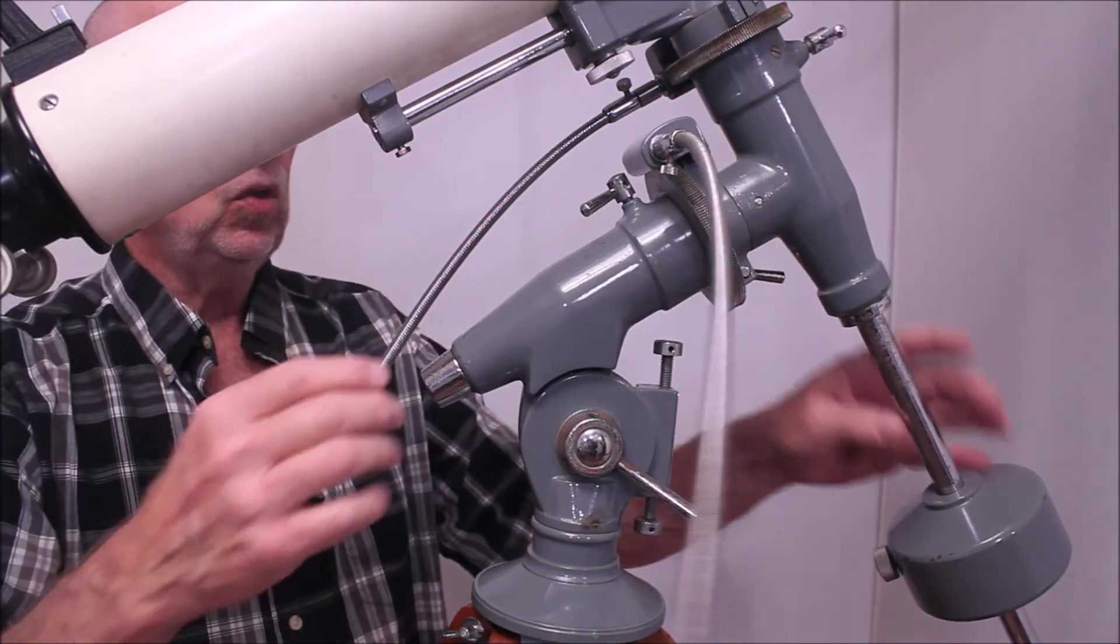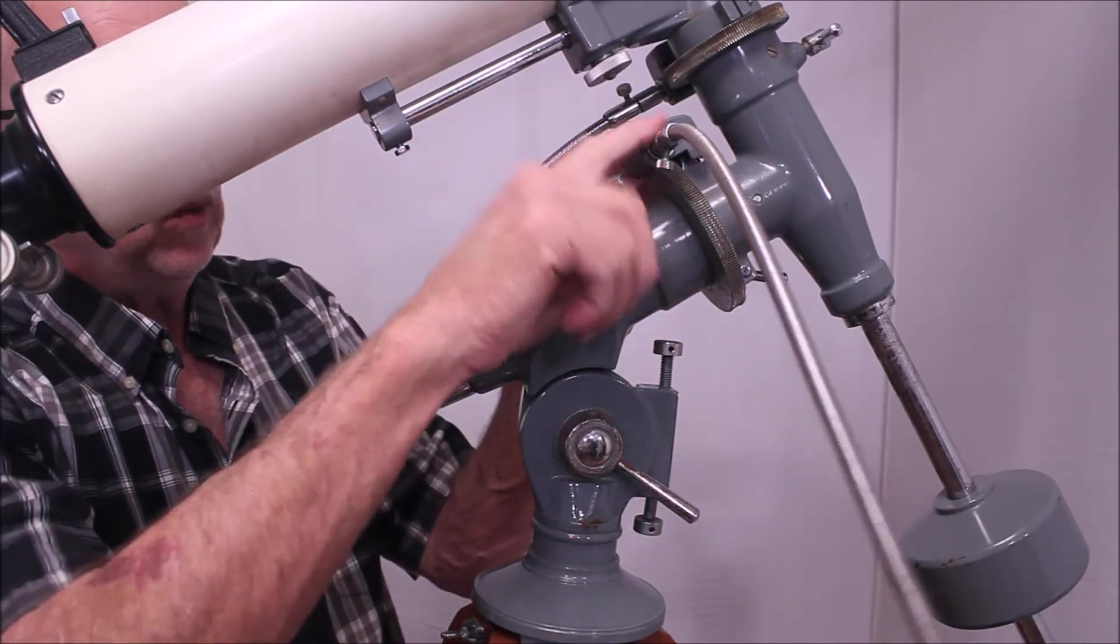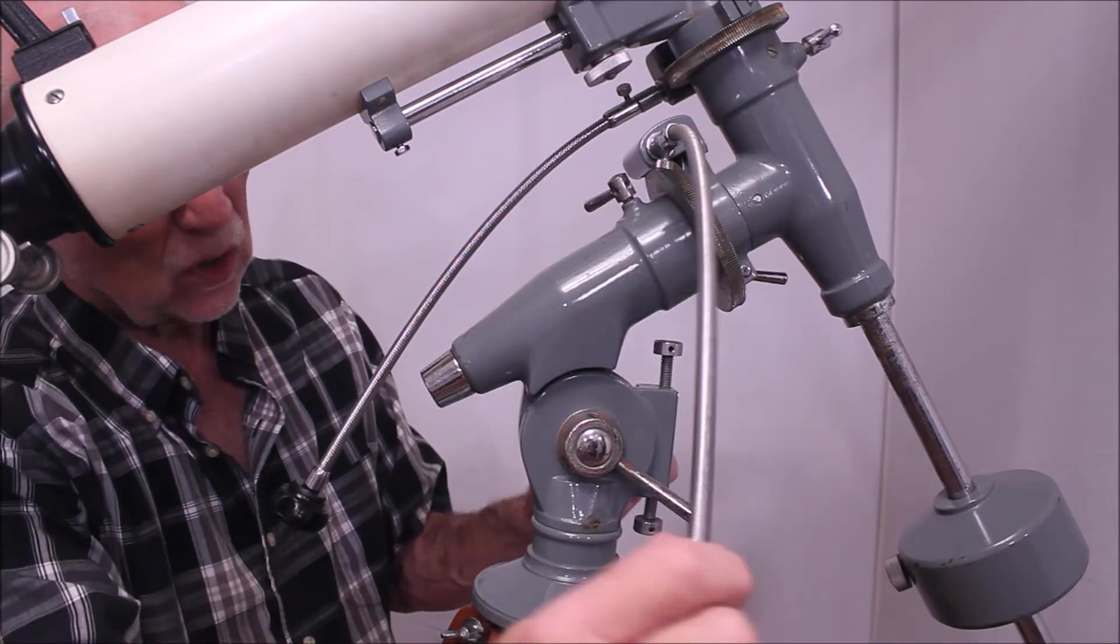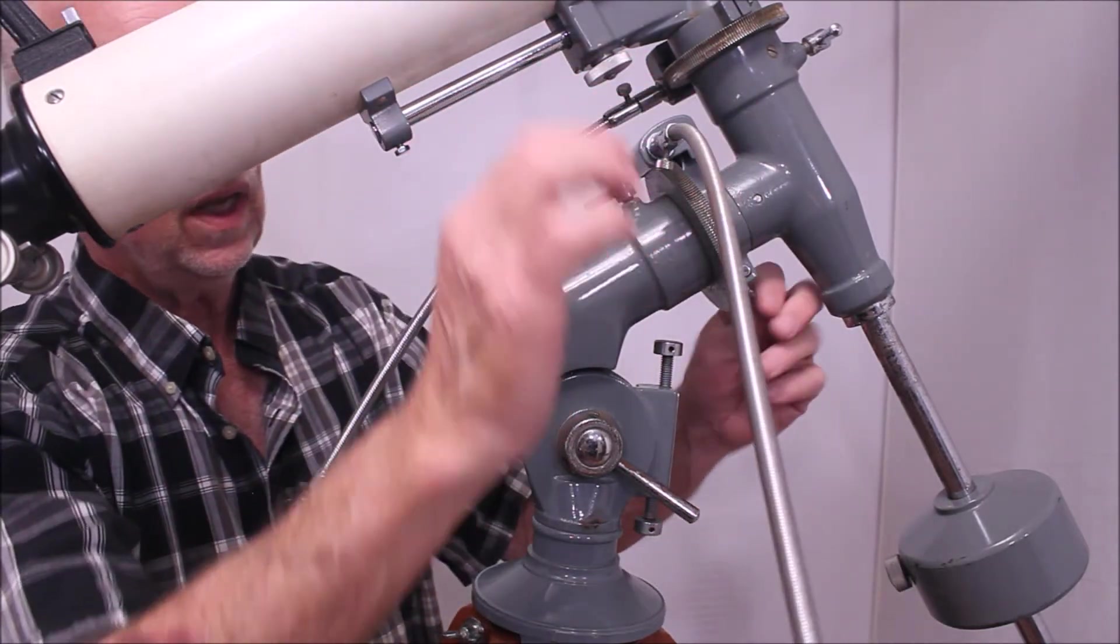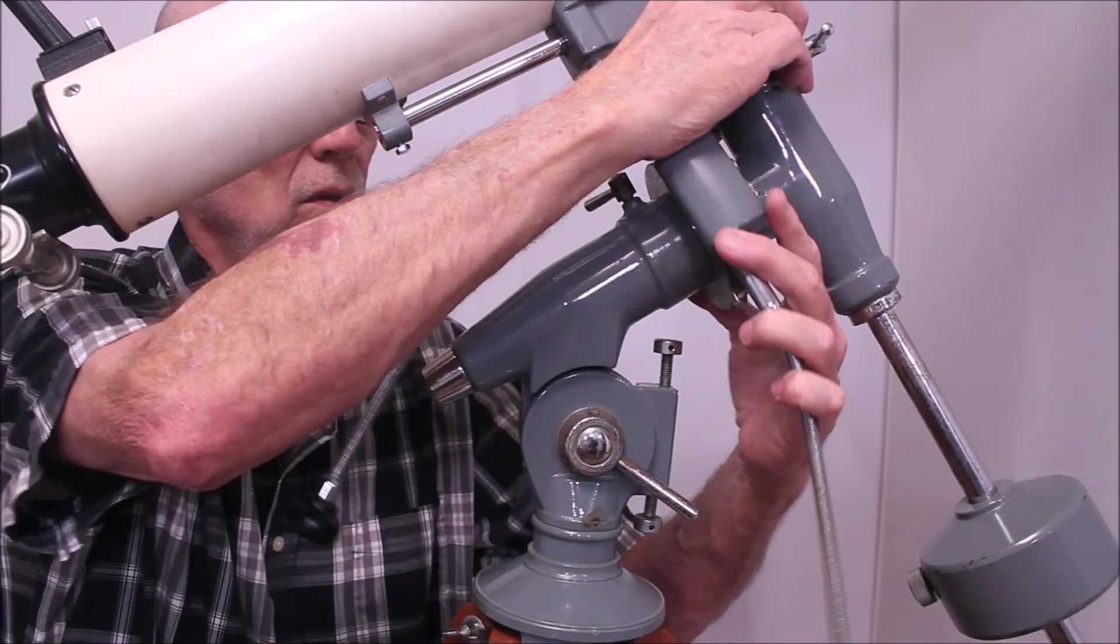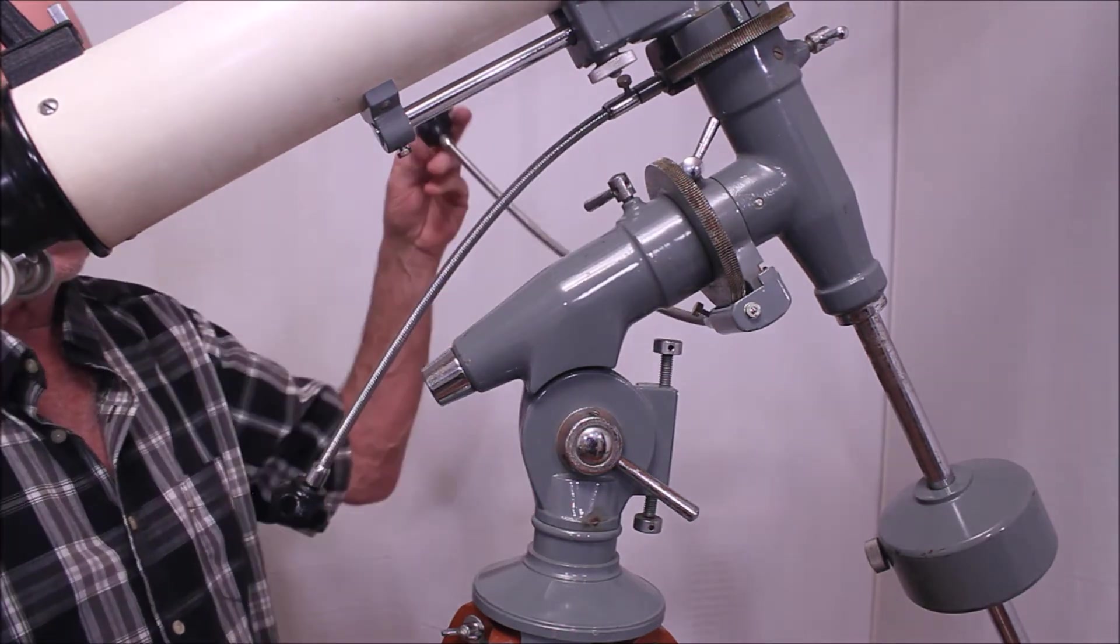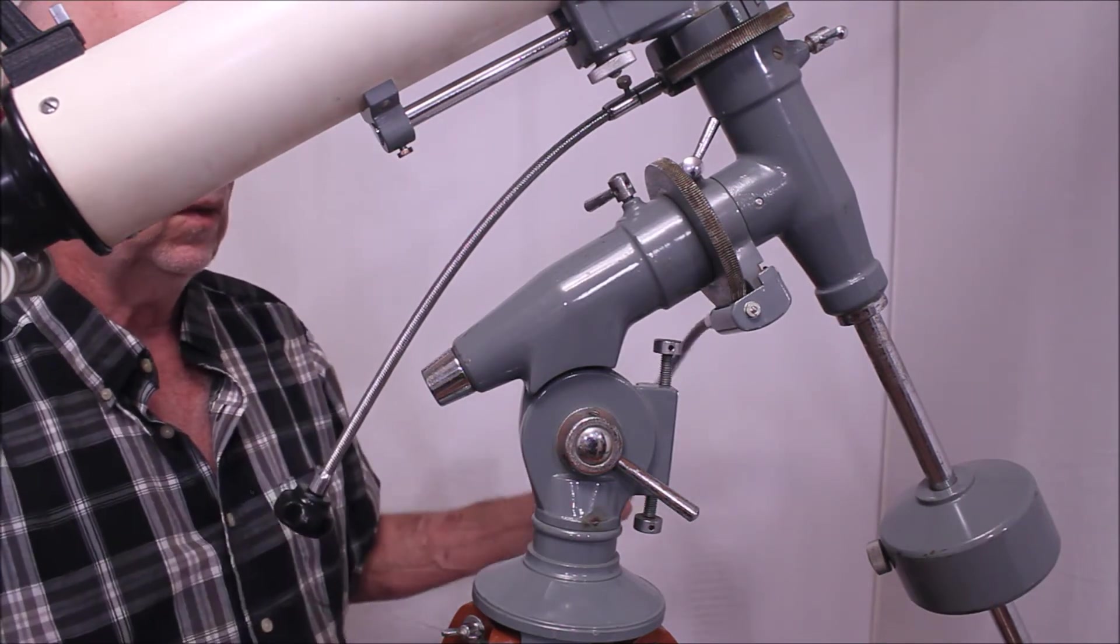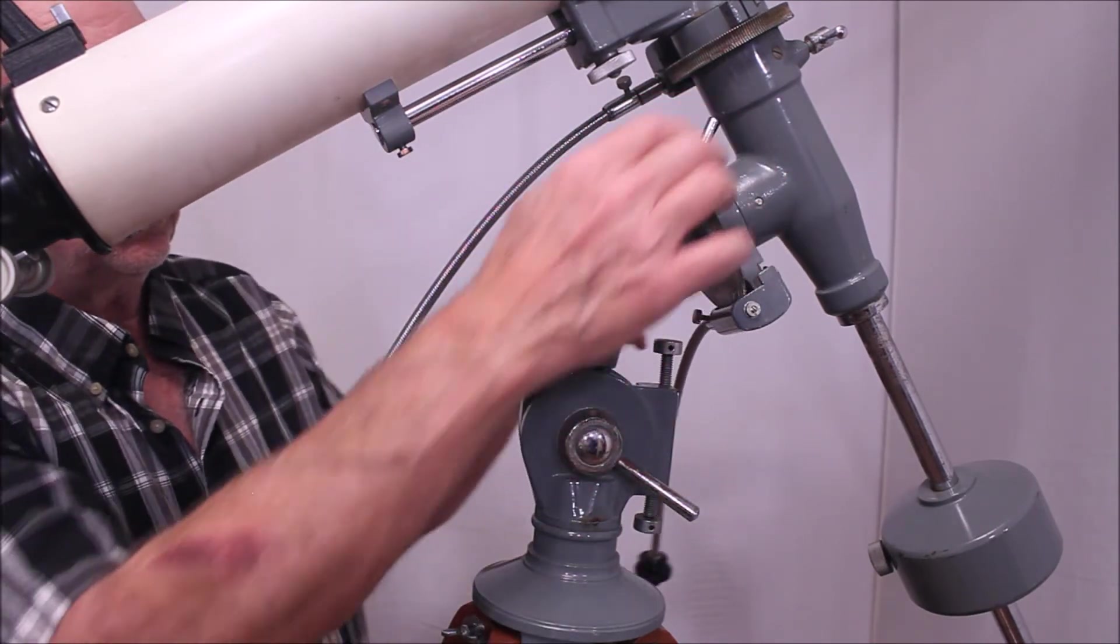Now you can see that this has the interesting and unique feature that if you want to reverse this there is no way to attach the slow motion to the other side. So what you have to do is lock this down, unlock it down here, rotate this whole thing around and now the remote is on the back side. So if you're switching orientations going from east to west so to speak then that's what you would do.